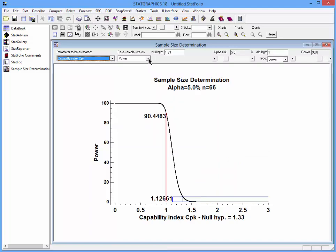The parameter to be estimated is CPK. I'm going to ask it to base the sample size on the power.